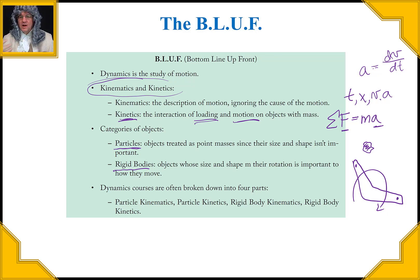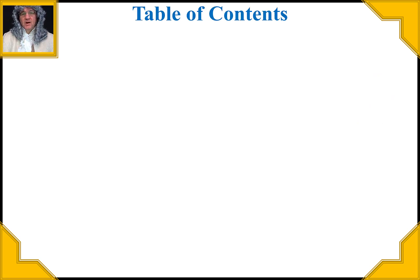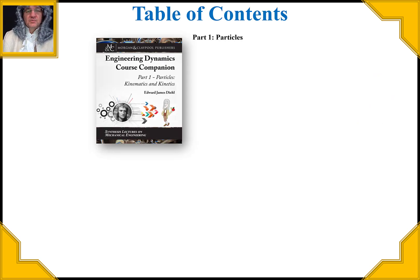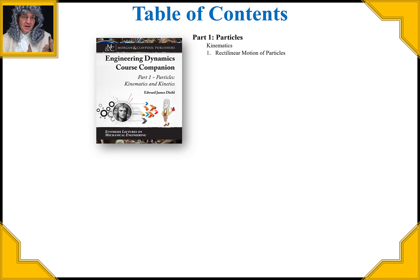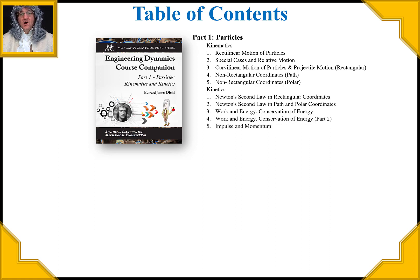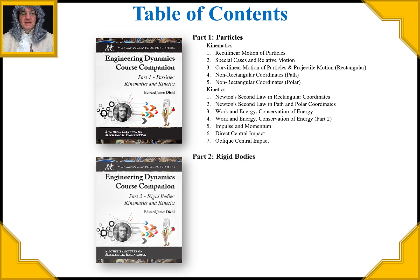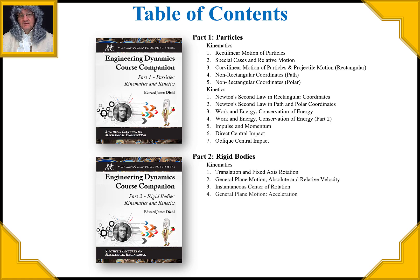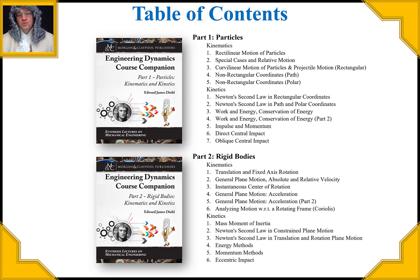It's really important to know the structure of the class so you can follow along and know where you are. The table of contents for part one — particles — starts with the kinematics of particles, with five classes of kinematics, followed by seven classes of kinetics. Part two, the second book, covers kinematics of rigid bodies with six classes, and six classes of rigid body kinetics. So we have a total of 24 classes.